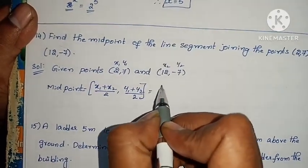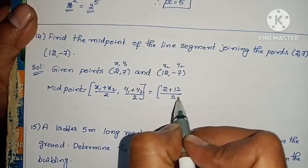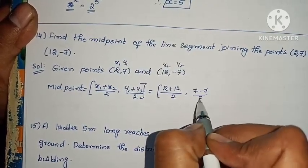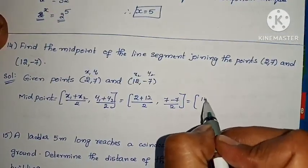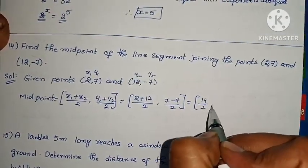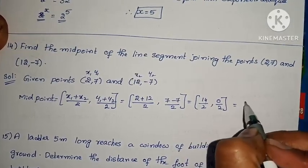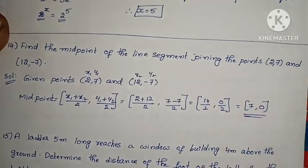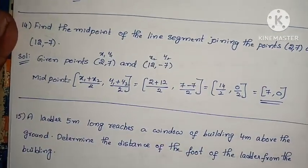Substituting the values: (2 plus 12) by 2, and (7 plus minus 7) by 2. That gives 14 by 2 and 0 by 2. 14 by 2 equals 7, and 0 by anything is 0. So the midpoint is (7, 0). Problem complete.